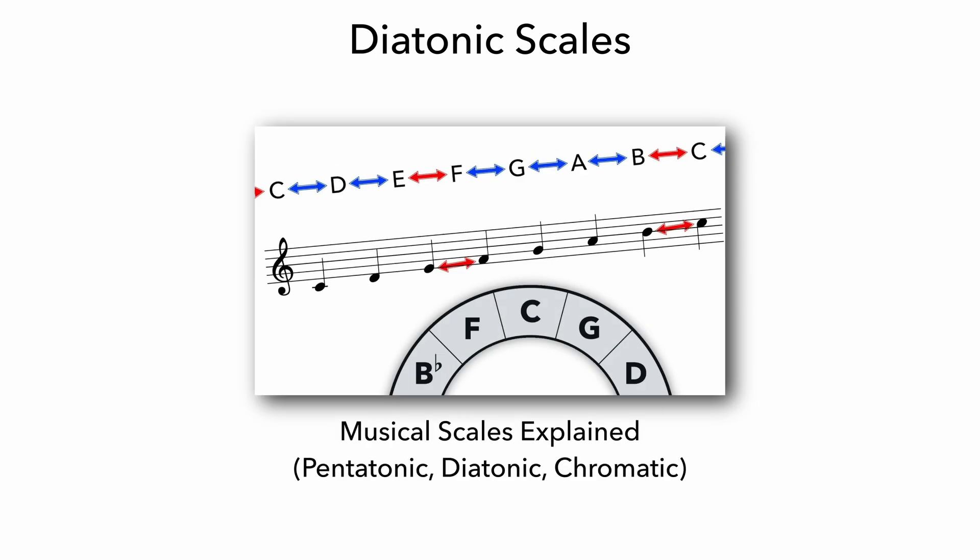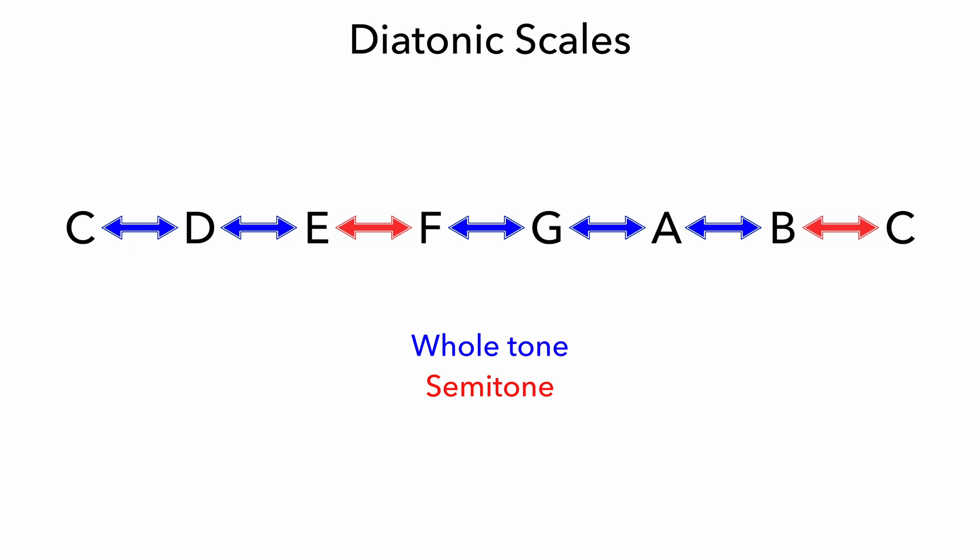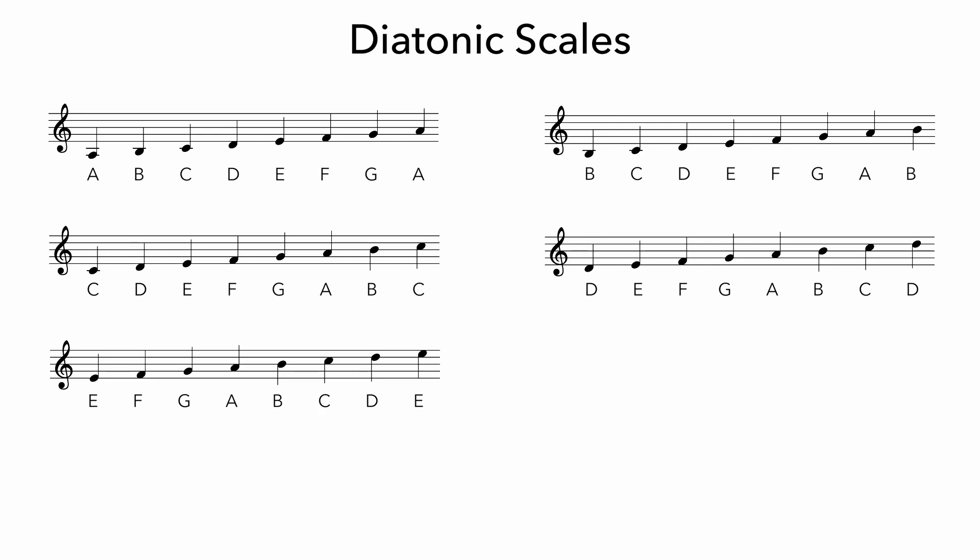I already explained the logic behind these scales in a different video, so I'll just do a short summary here. A diatonic scale is a 7-note scale built out of 5 whole tones and 2 semitones. Since we can begin the scale on each of our 7 notes, there are 7 different diatonic scales.